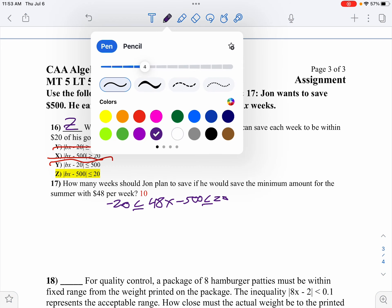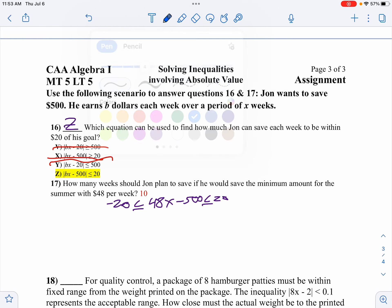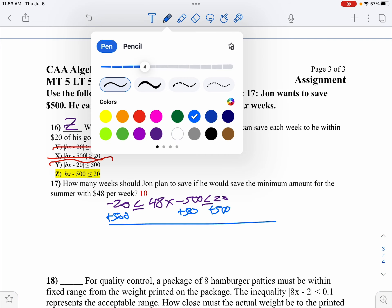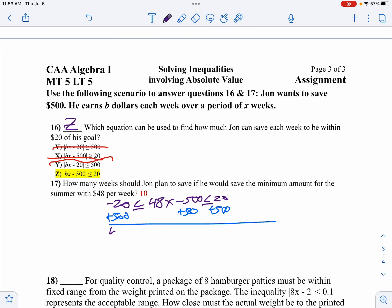Then what I'll do is I'll add $500 to the left, the right, and the middle. So at that point, we'll get $480 is less than or equal to 48X, which is less than or equal to $520. So I'll divide everything by $48.